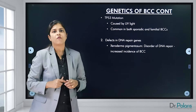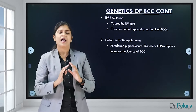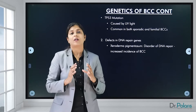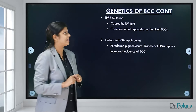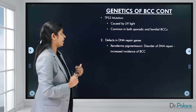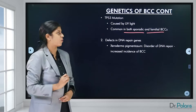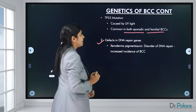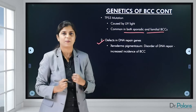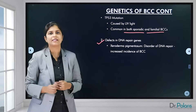The P53 gene is a tumor suppressor gene — the policeman of the genome — that arrests defective or damaged cells in the G1 phase of the cell cycle. When P53 is mutated, cells continue to proliferate unchecked. This is common in both sporadic and familial basal cell carcinomas. Defects in DNA repair genes are also a risk factor; xeroderma pigmentosum is a common condition arising from such defects, and these patients have increased incidence of basal cell carcinoma.